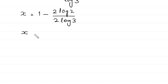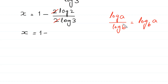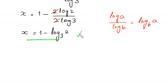Next, x equals 1 minus log of 2 over log of 3. According to log property, log of a over log of b equals log base b of a. So log of 2 over log of 3 equals log base 3 of 2. Therefore, x equals 1 minus log base 3 of 2. This is the final answer.